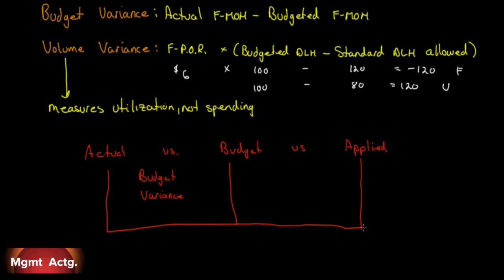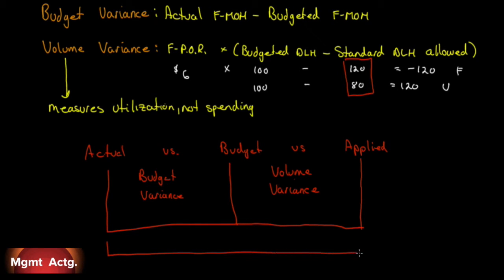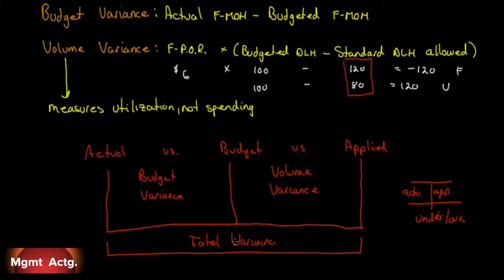The difference between the budget and what we applied is called the volume variance, and we can see plainly that it really is a volume variance. It's the difference in the volume allowed based on the output we produce — how many hours we use to carry that overhead to cost of goods sold or cost of inventory. The total difference between what we actually incurred and what we applied is our over or under applied overhead, which is what the total variance measures.